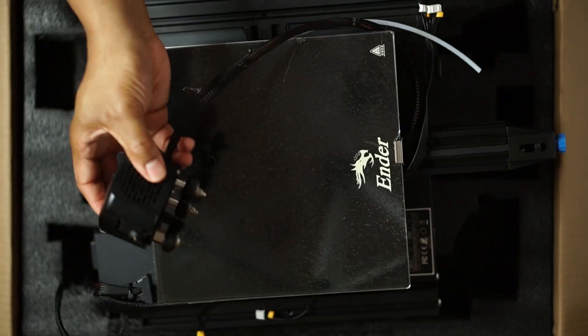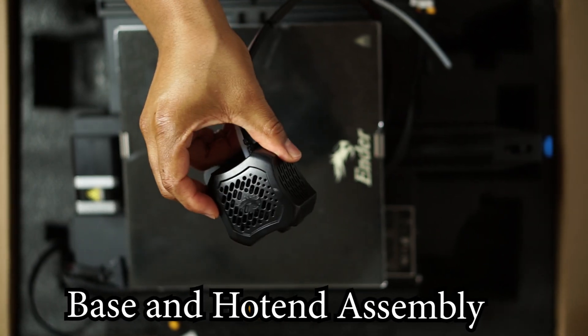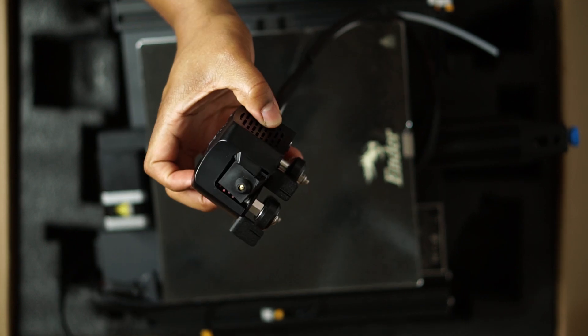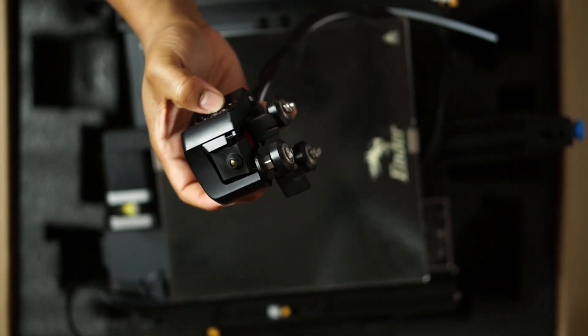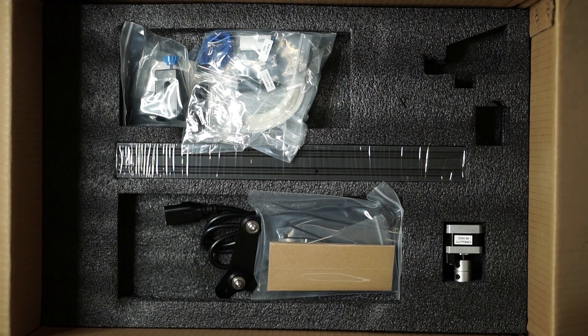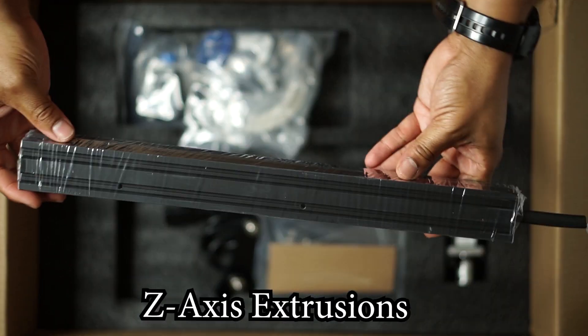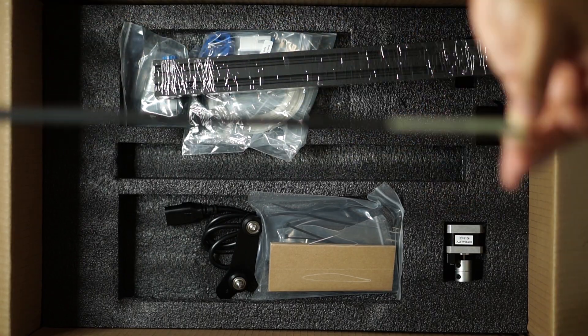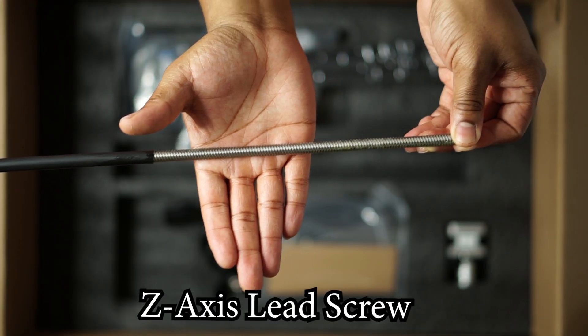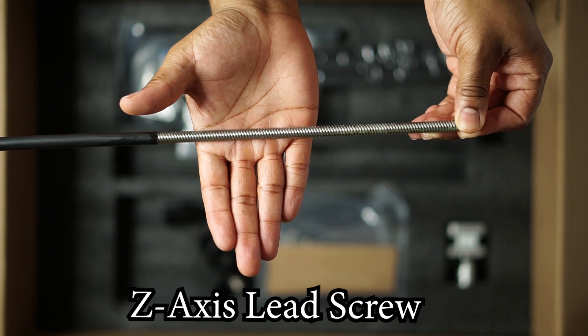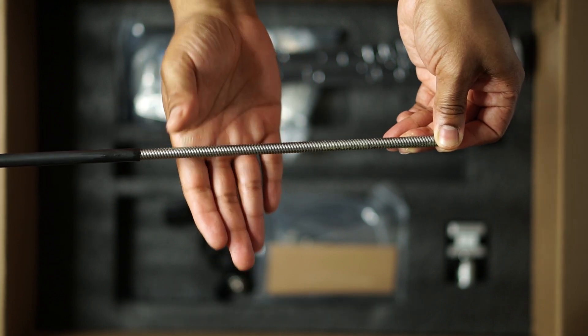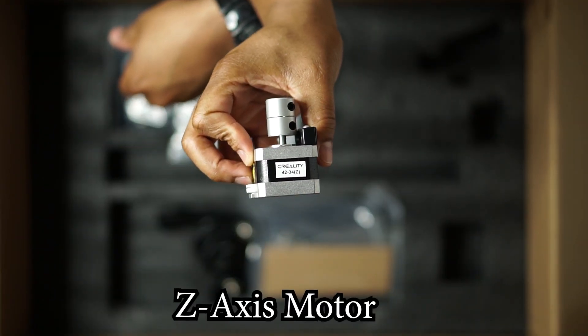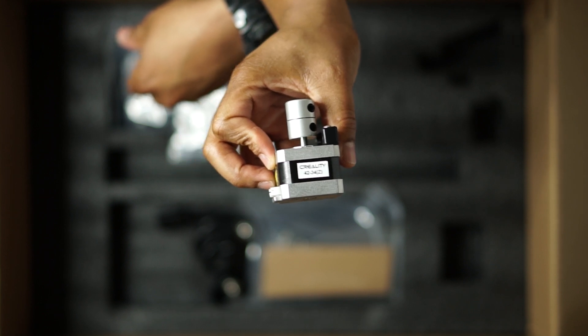Next up you have your printer base and it already has the hot end assembly attached to it. The hot end is where your filament actually comes from while you're printing and right here you can see the nozzle. And here are your z-axis extrusion and the z-axis lead screw, and this is what's going to help your printer move up and down as it prints. Here is that z-axis motor which is going to drive that z-axis screw.